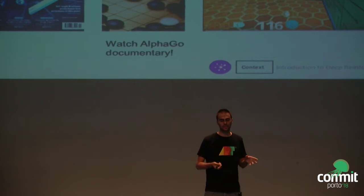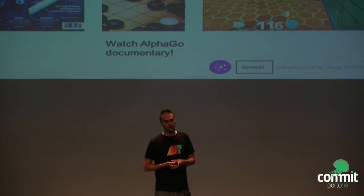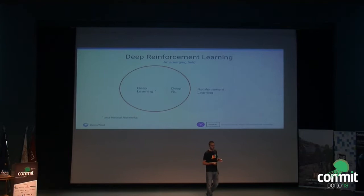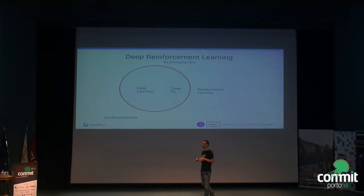Deep reinforcement learning is at the intersection of two fields: deep learning and reinforcement learning. The first thing to notice is that deep learning is actually just a rebranding of the field of neural networks. The name 'deep' came from the fact that at some point people were able to train neural networks with many more layers — deep models rather than shallow. This field is inspired by what happens in the brain and the connections between neurons.